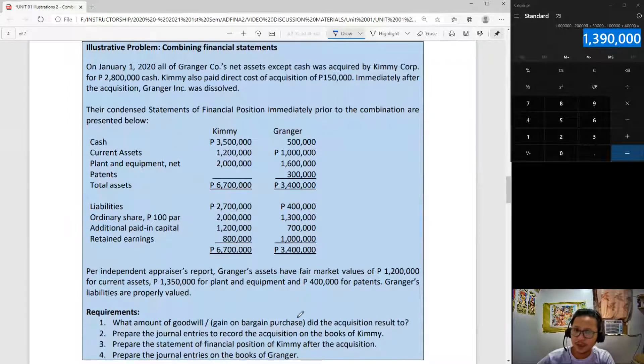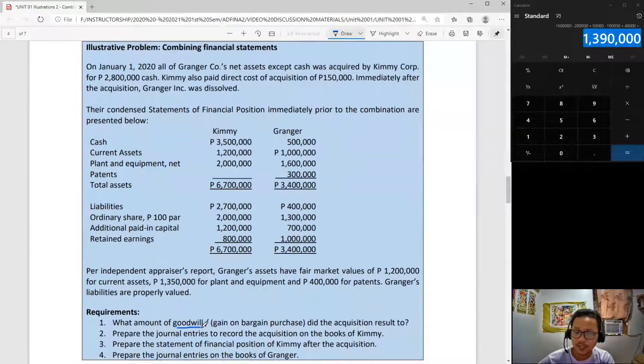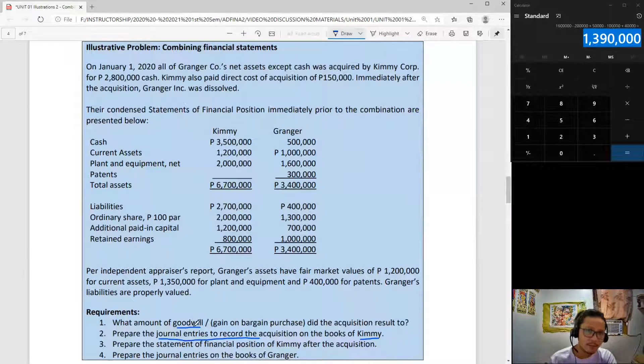Your requirements are my suggestions on what to do first and what to do next. Requirements one to four are the steps you can use. First is goodwill computation - this is the first step in most business combination problems. Second, record necessary journal entries to record the acquisition in the books of Kimi, who is our acquirer. Third, prepare the statement of financial position of Kimi after acquisition.